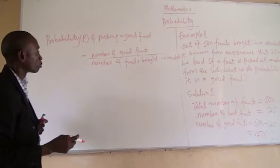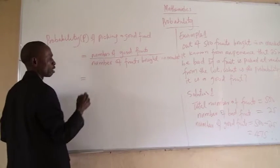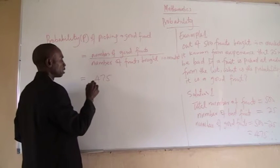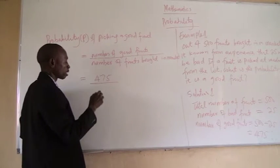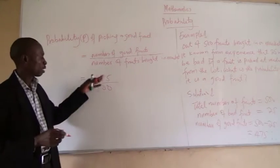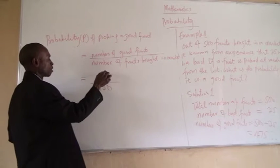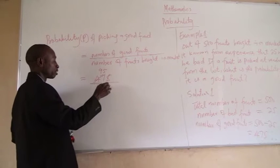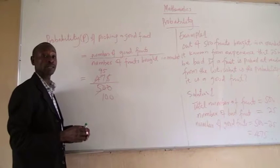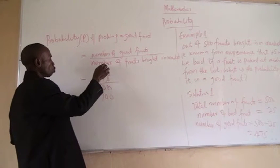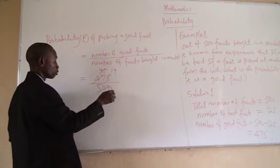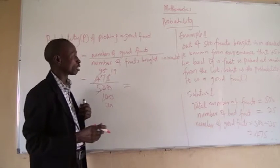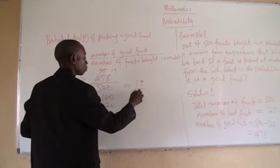Number of good fruits all over number of fruits bought in the market. When we substitute the values, we have 475 good fruits all over 500 total fruits. There is a common factor of 5: 5 into 475 gives 95, and 5 into 500 gives 100. There is also a common factor of 5 again: 5 into 95 gives 19, and 5 into 100 gives 20. So the probability of picking a good fruit from 500 fruits, of which 25 are bad, is 19 over 20.